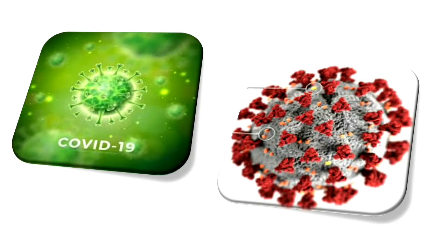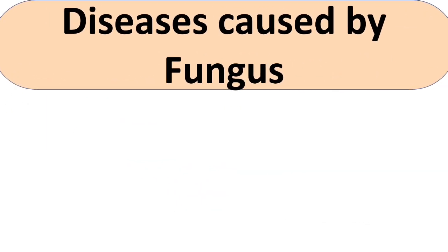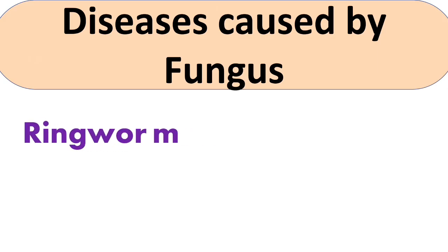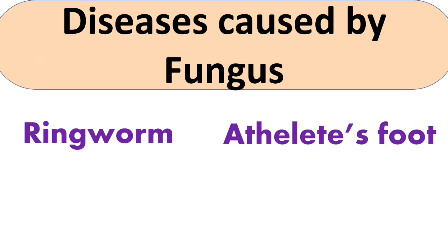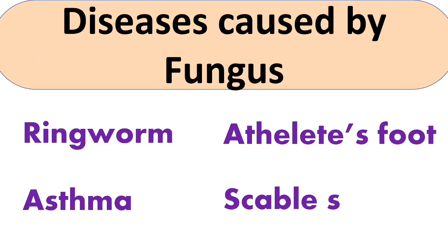What is the prevention? The first one is social distancing. Second is using a mask on your nose and mouth. Third is regularly washing your hands. Next, there are diseases caused by fungus, and they are ringworm, athlete's foot, asthma, and scabies.